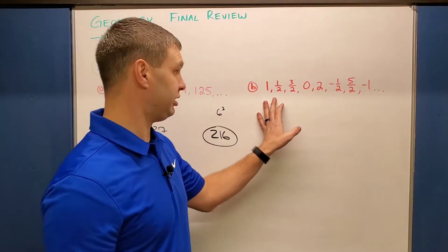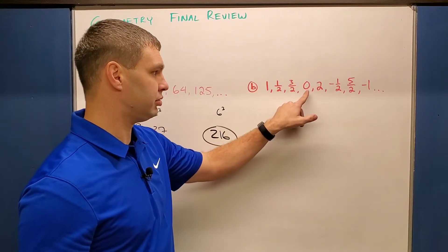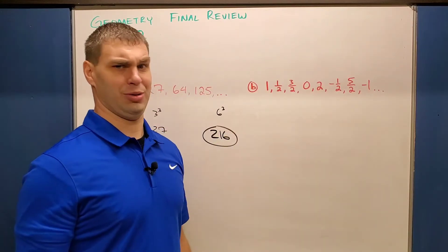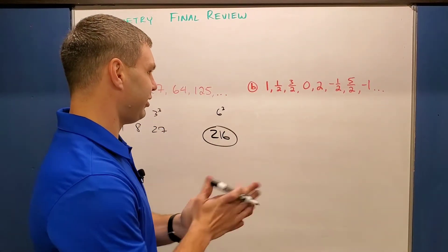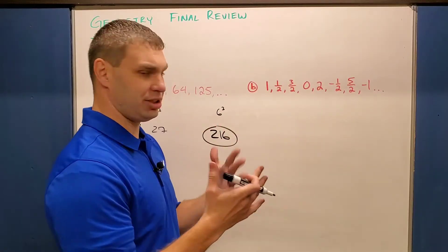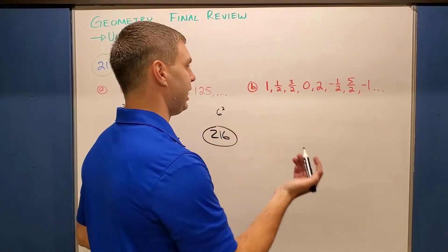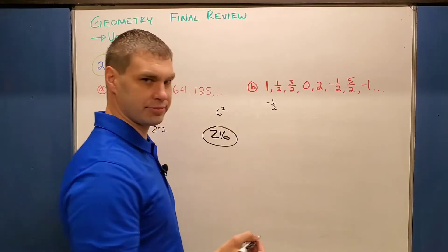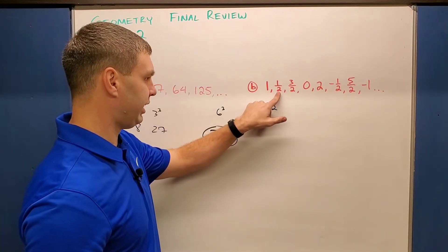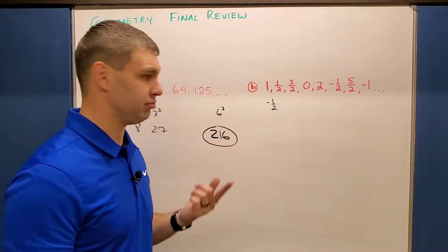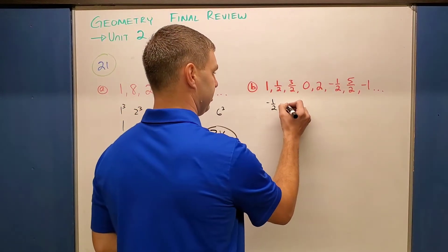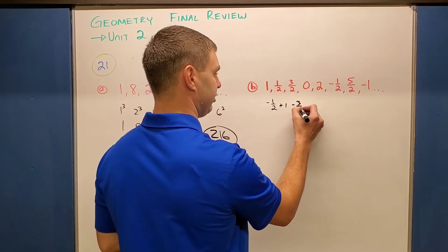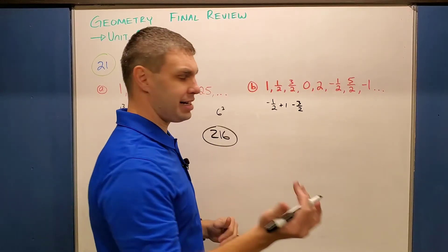This next one, I think is very challenging. It goes 1, 1/2, 3/2, 0, 2, -1/2, 5/2, -1. What's going on here? So if you'll notice what we're doing in between each one, let's just take it each piece. First off, to go from 1 to 1/2, I subtract 1/2. And then to go from 1/2 to 3/2, I add 1. Then I go back down to 0, and to go from 3/2 to 0, I subtract 3/2. To go back to 2, I have to add now. I'm going to add 2.